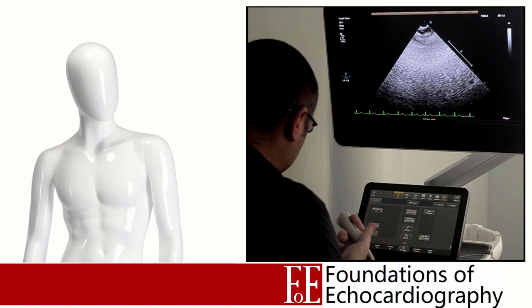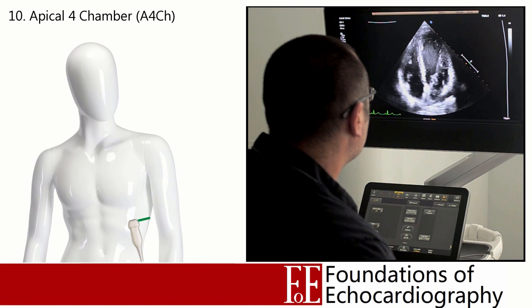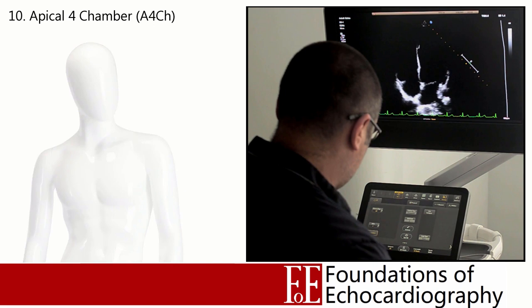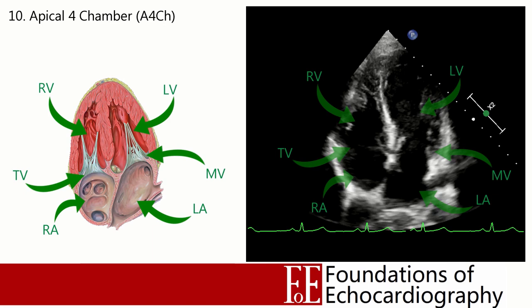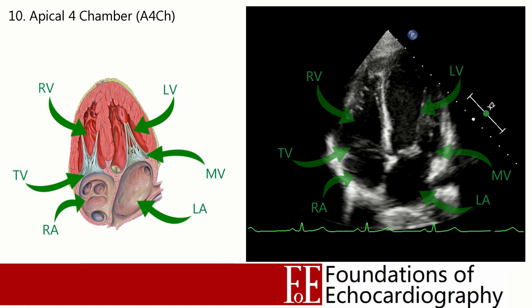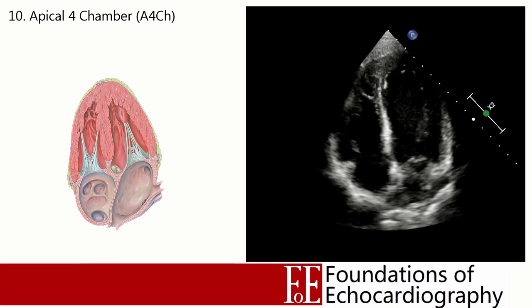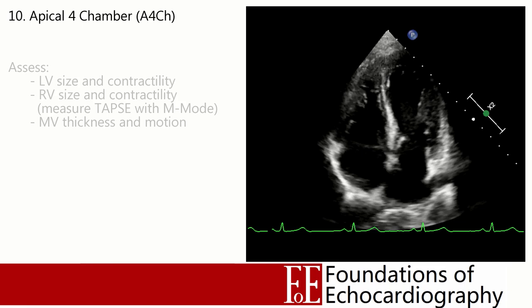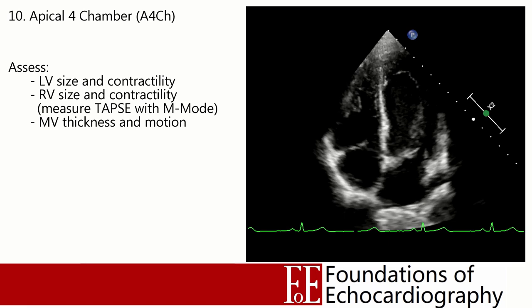Next we switch to the apical window. With the patient in the left lateral position, place the probe over the apex of the heart with the orientation marker pointing towards the patient's left. As the apex is in a different position in each patient, you may need to slide around to find it. Once found, place the apex of the left ventricle in the centre of the image with the intraventricular septum running straight down. The right heart appears on the left of the image, the left heart on the right; ventricles are in the near field, AV valves and atria in the far field. A correctly oriented apical four chamber view won't have the aortic valve in view.